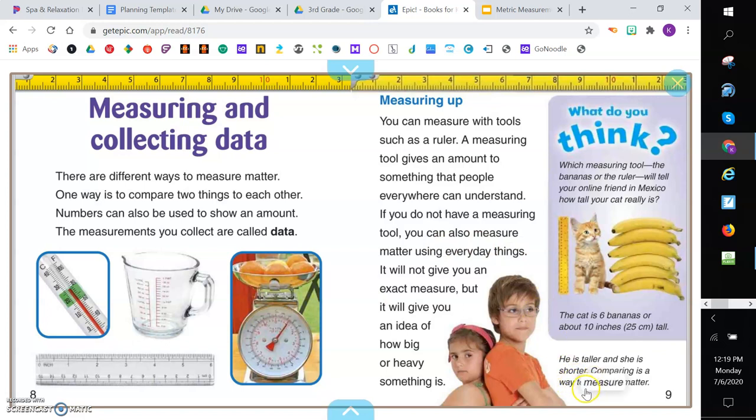Our caption here is he is taller and she is shorter. Comparing is a way to measure matter. What do you think? Which measurement tool, the bananas or the ruler will tell your online friend in Mexico how tall your cat really is. The cat is six bananas or about 10 inches tall.